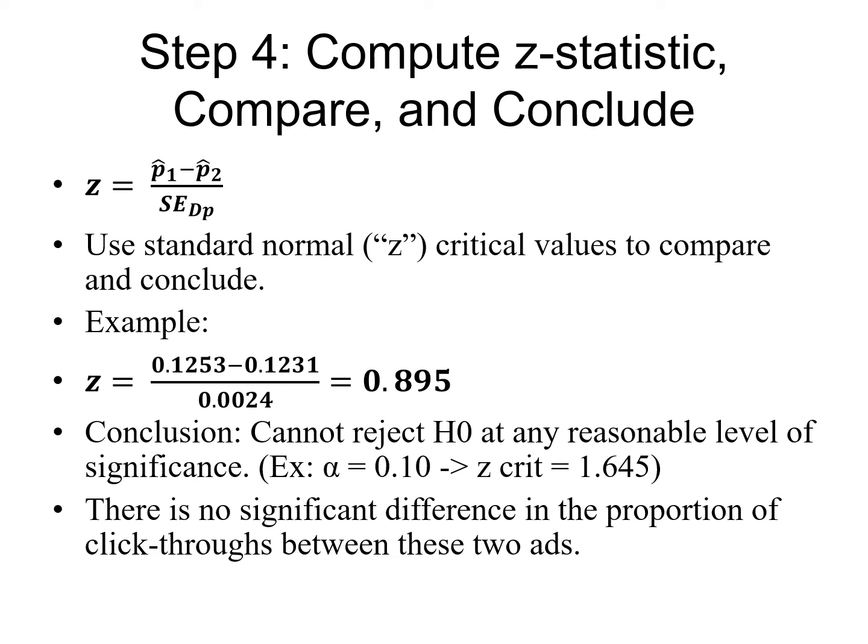We use the standard normal whenever we're dealing with proportions as long as we have at least five successes and at least five failures in each sample. In this case, our samples are so huge. We have literally thousands of successes and thousands of failures in each of our samples. So we can certainly use standard normal in this case. There are no concerns about that whatsoever. So here we go. So you do the calculations as that 0.1253 subtract off the 0.1231. So take the add A proportion, subtract off the add B proportion, and then divide by that standard error for a difference in proportions, that 0.0024. And you'll end up with 0.895.